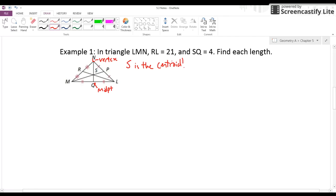So now we know we have a centroid, which means we can say a bunch of things. I could say NS is two-thirds of NQ,